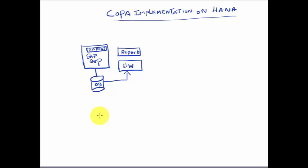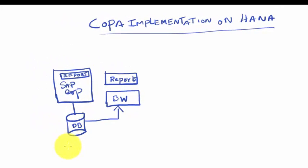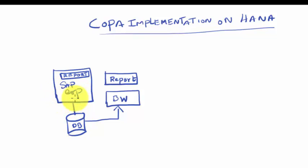In this topic we are going to look at the COPA implementation on HANA as an agile data mart. We took a look at what a COPA report is and where it lives. This is the technical representation of how things are currently working. The SAP ERP system is an application layer that naturally needs a database to run, so most customers have some other database certified by SAP, for example Oracle or DB2. The module lives inside the SAP ERP and all the tables are stored inside the database.